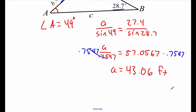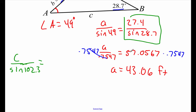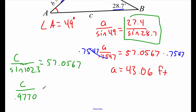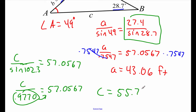We're measuring in feet. The last piece we need to find is side c. We go with c over sine of angle C, which is 102.3 degrees, equals that same b information: 57.0567. Typing sine of 102.3 into the calculator gives 0.9770. Multiplying that decimal over to the right-hand side, we get side c to be about 55.74 feet.